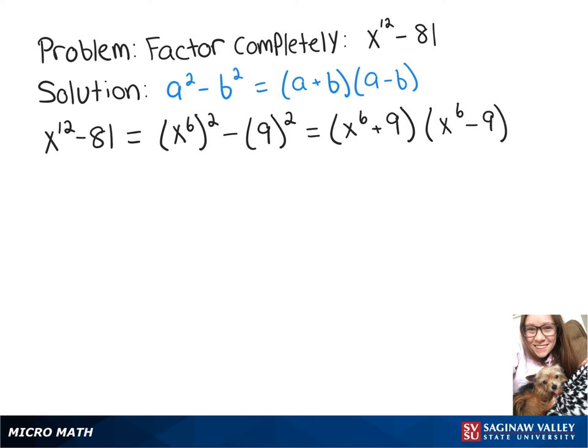Now you can see that we have another difference of squares to solve. So we need to take that x to the 6th minus 9 and break it down even more. We can rewrite it as x to the 3rd squared minus 3 squared, and we can now rewrite that as x to the 3rd plus 3 times x to the 3rd minus 3.